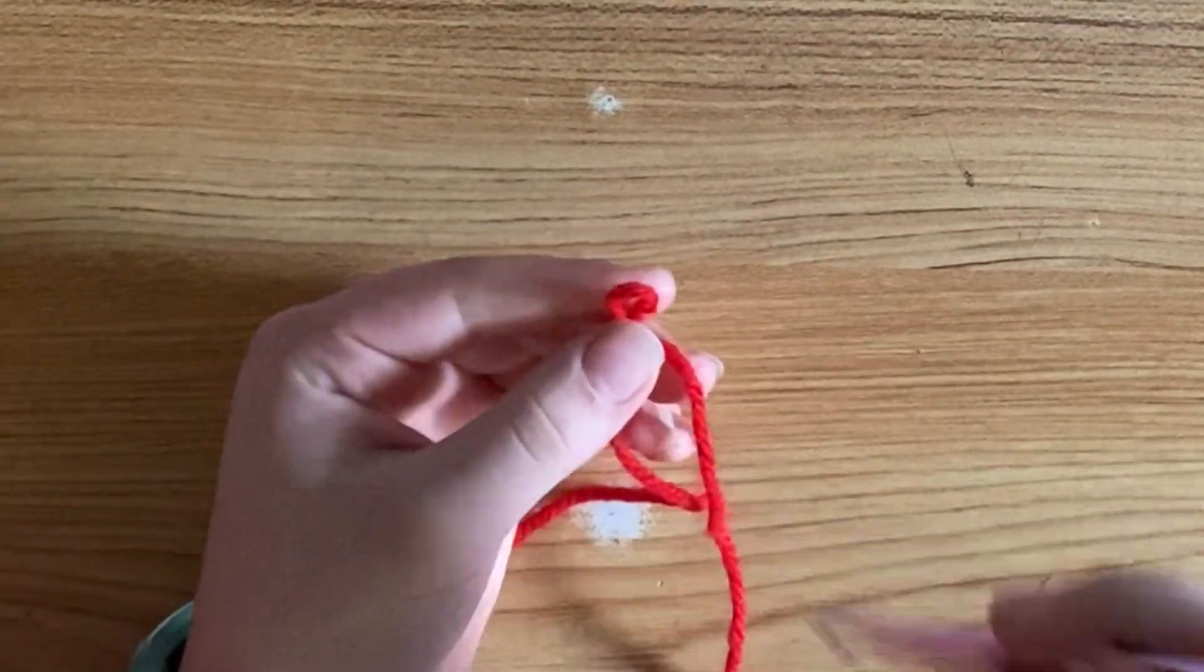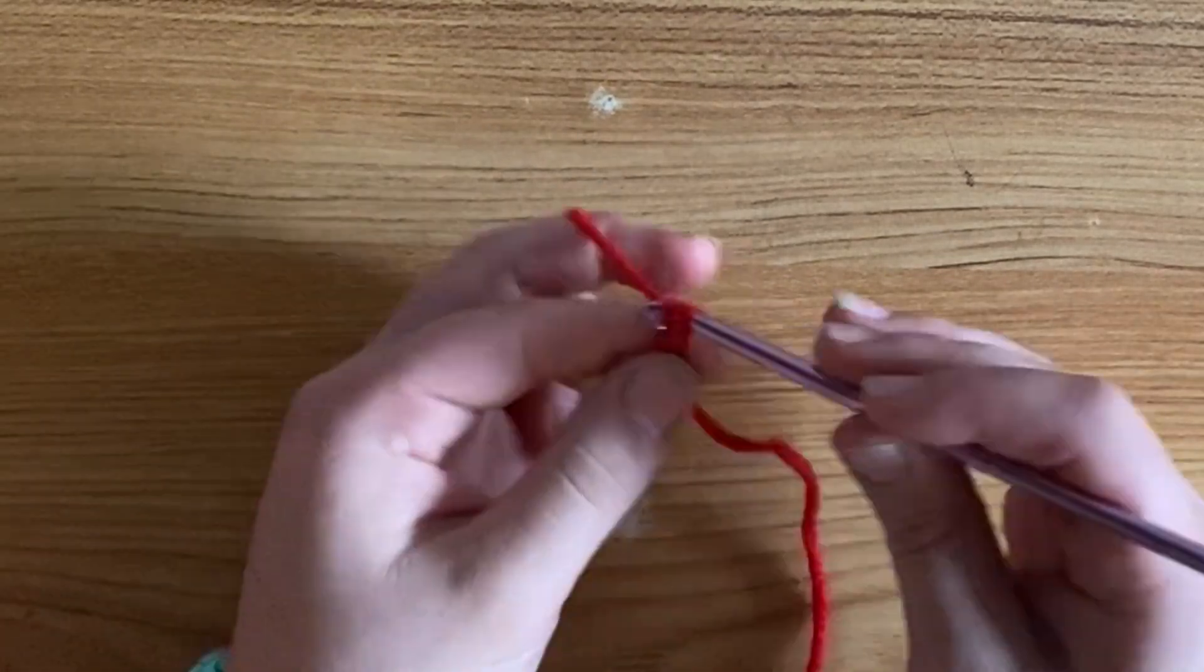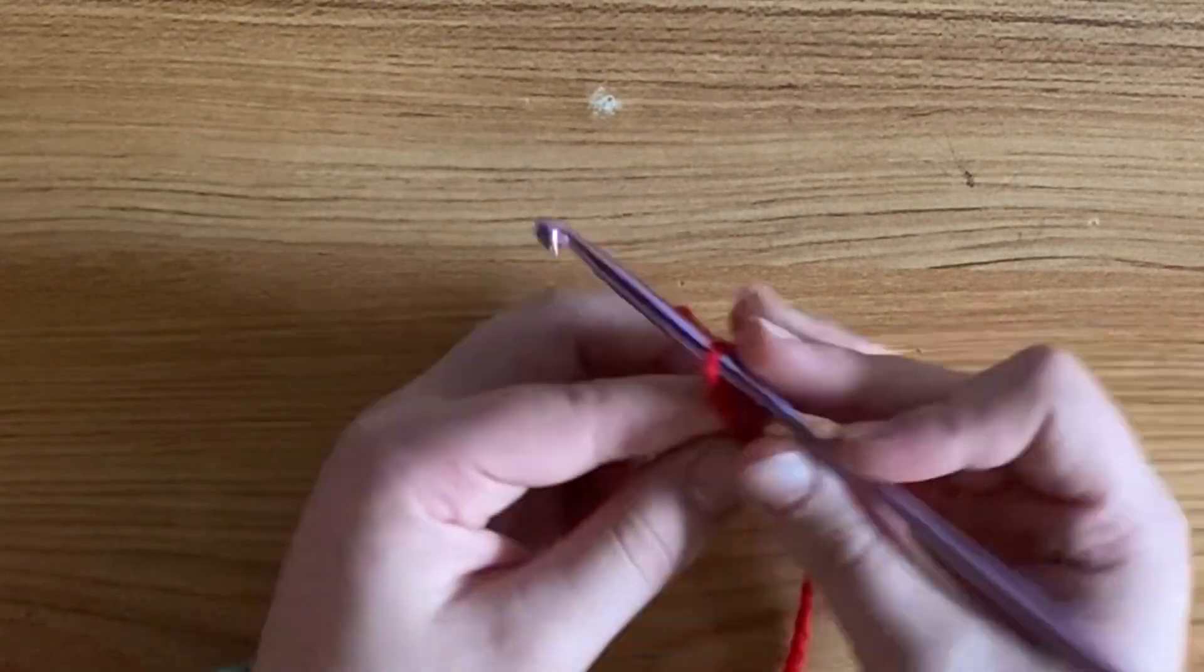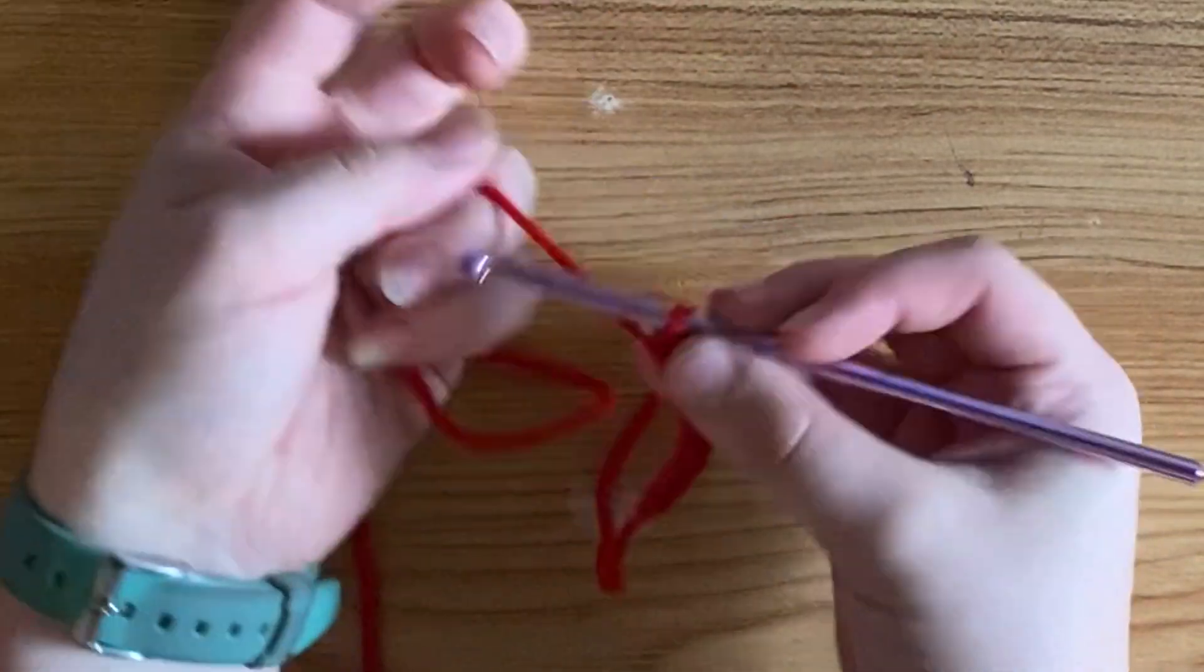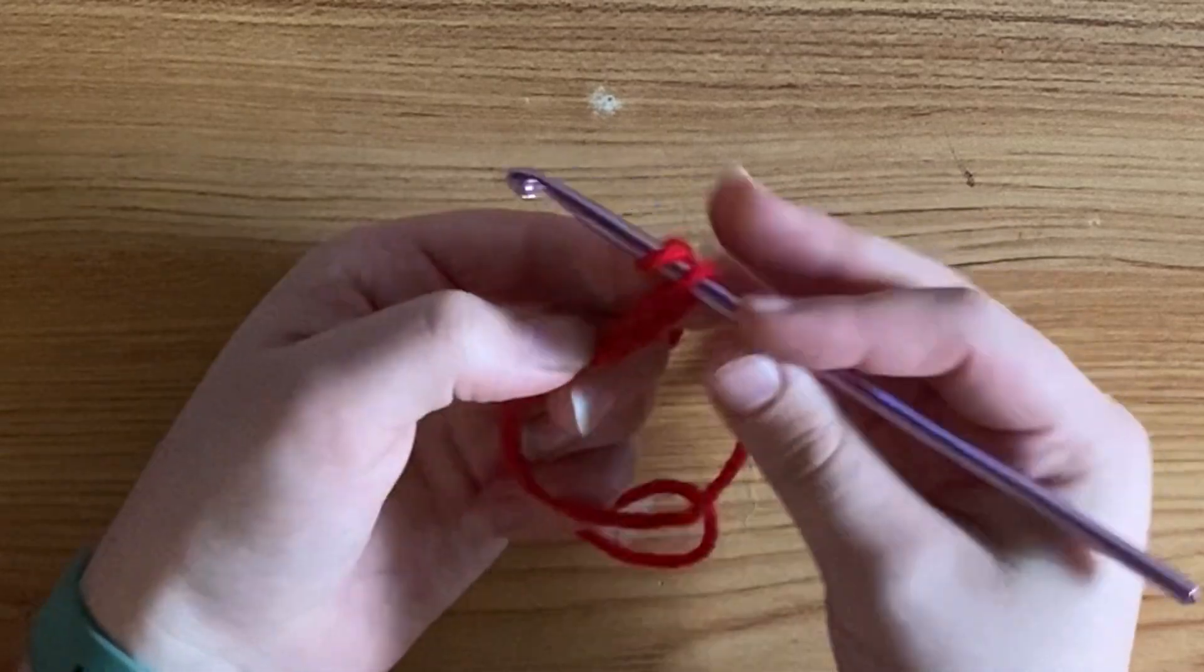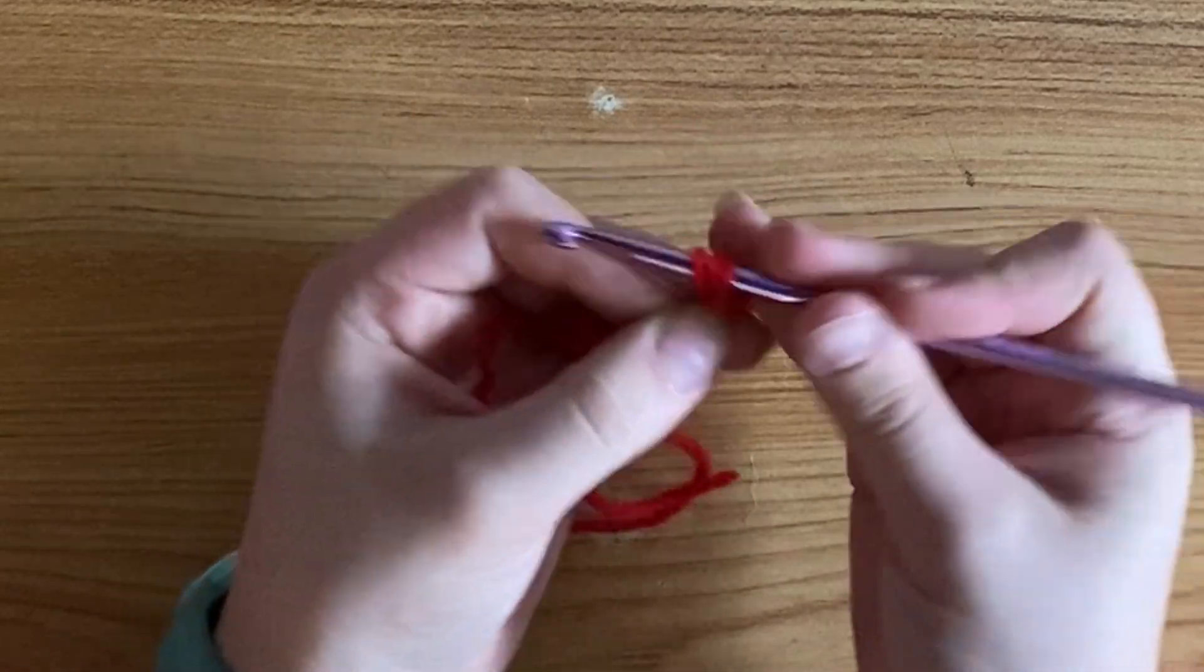Start with a slipknot and a chain of 7. After that, you're going to begin in the second chain from the hook and make a half double crochet, and then you're going to put one half double crochet in every chain down the row.